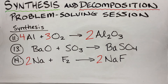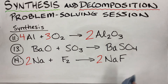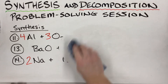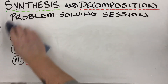Number 14: sodium and fluorine gas — two lone elements, a simple synthesis. Sodium is a metal so no subscript; fluorine is a diatomic gas so it gets a 2. Crisscross charges: sodium is one, fluorine is one — they cancel, giving NaF. To balance, put 2 in front of NaF to match the two fluorines, then 2 in front of Na. Done.